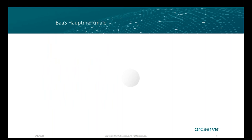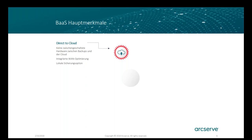Sprechen wir über das Backup-as-a-Service. Die Hauptmerkmale: Direct to the Cloud — keine zwischengeschaltete Hardware. Wir nutzen eine integrierte WAN-Optimierung, die Ihre Daten vor dem Transport komprimiert und in unser Rechenzentrum überträgt. Dabei verbirgt sich eine Mehrkanal-Verbindung dahinter, die mehrere Kanäle gleichzeitig aufbaut, um die maximale verfügbare Bandbreite auszulasten. Des Weiteren gibt es die Möglichkeit, Daten bei Bedarf auch auf ein lokales NAS-System auszulagern.